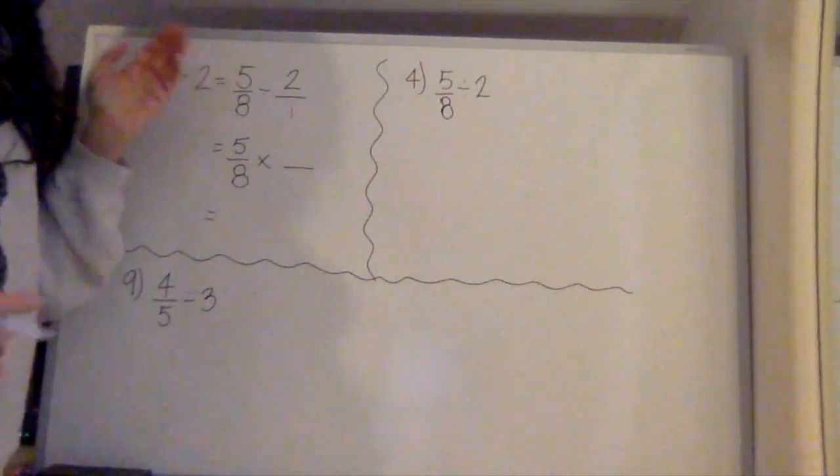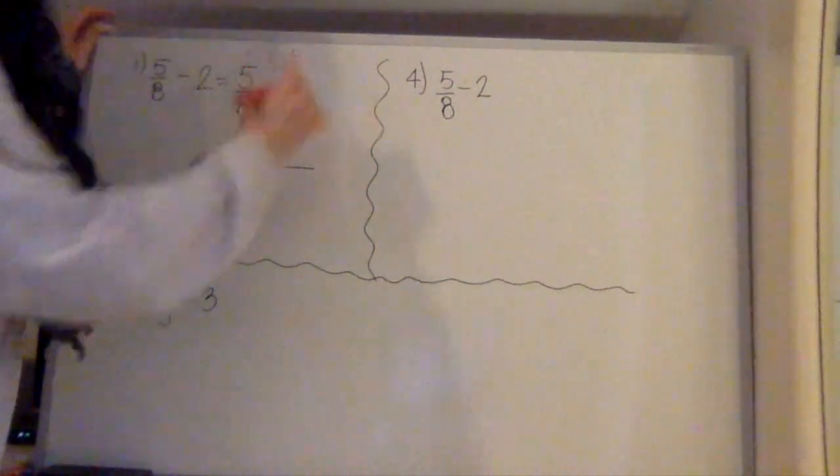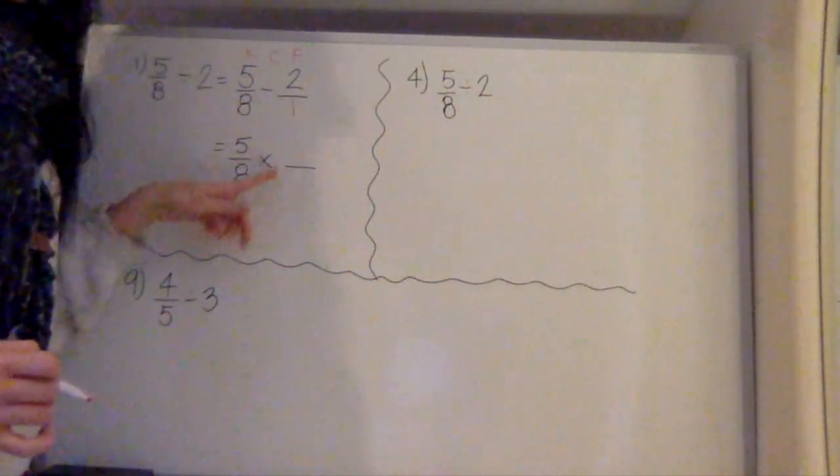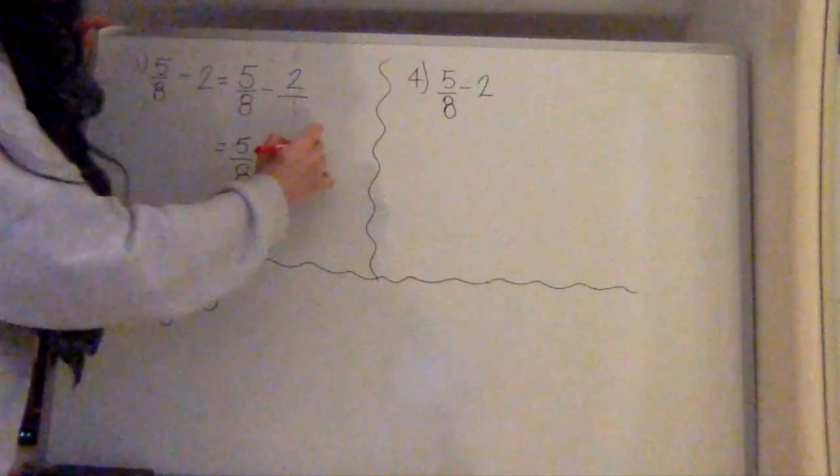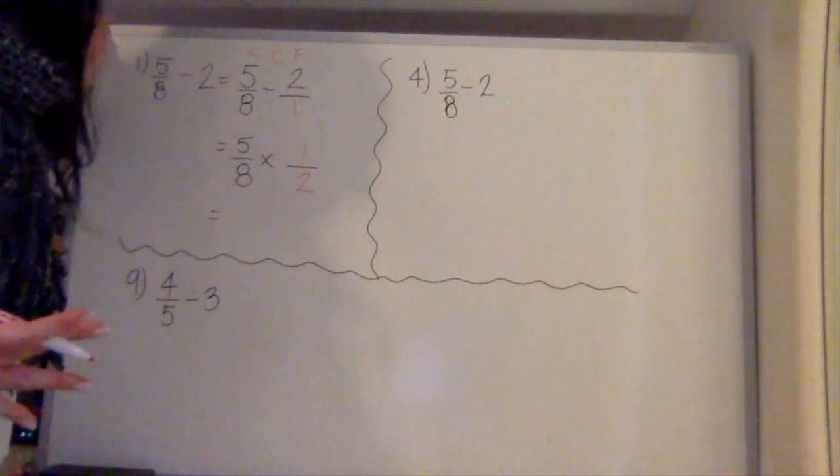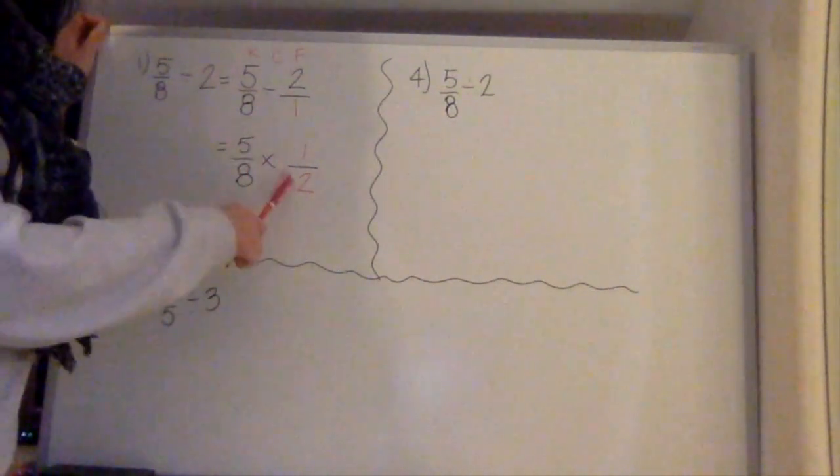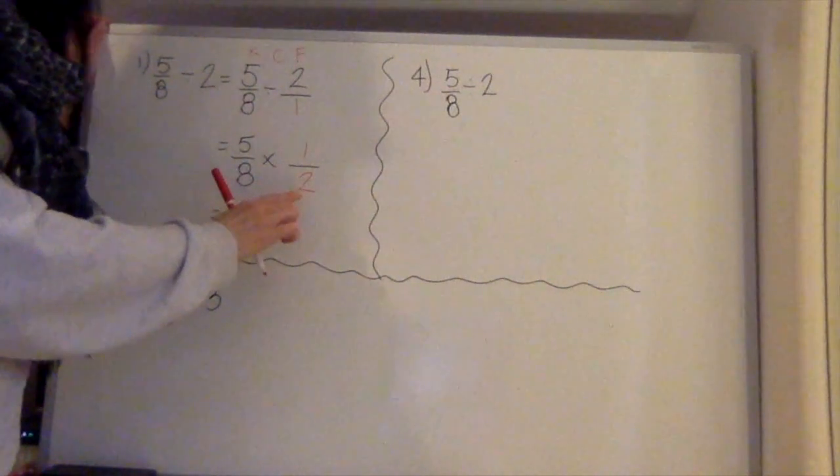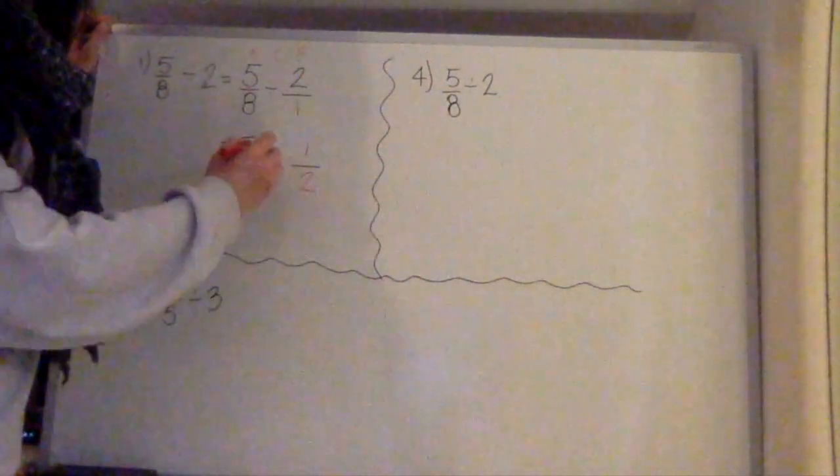The next step would be to use keep, change, flip. So I'd be keeping my 5/8, changing my division to multiplication, and then flipping my 2 over 1 to 1/2. Now it's time to multiply. I look diagonally to make sure I can't use my trick. In this case, there's nothing in common between the 2 and the 5, or the 1 and the 8. So I just multiply straight across.